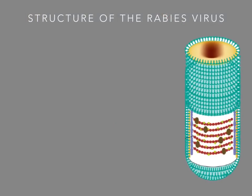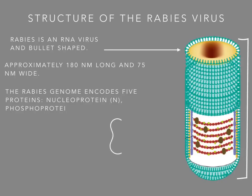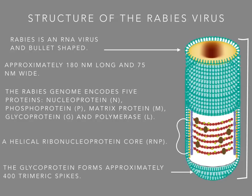The structure of the rabies virus follows. It's an RNA virus and bullet-shaped, approximately 180 nanometers long and 75 nanometers wide. The rabies genome encodes five proteins: nucleoproteins, phosphoproteins, matrix proteins, glycoproteins, and polymerase. It has a helical ribonucleoprotein core, RNP. The glycoprotein forms approximately 400 trimeric spikes, found all on the outside of the rabies virus.